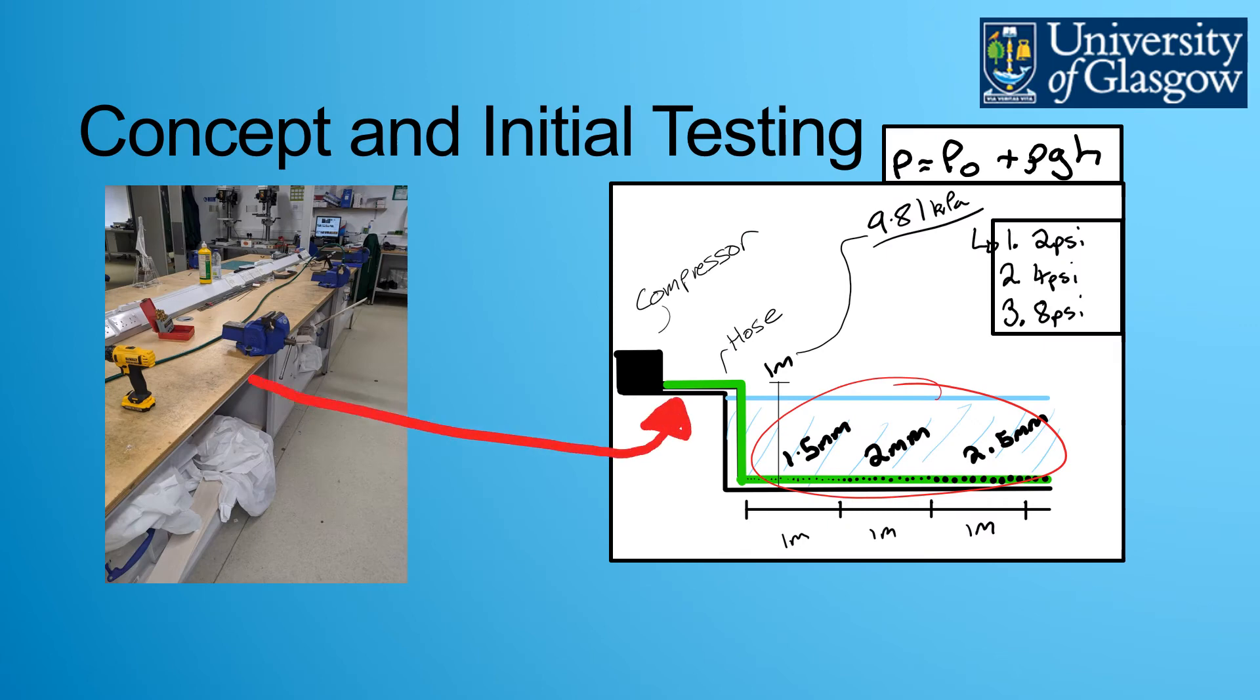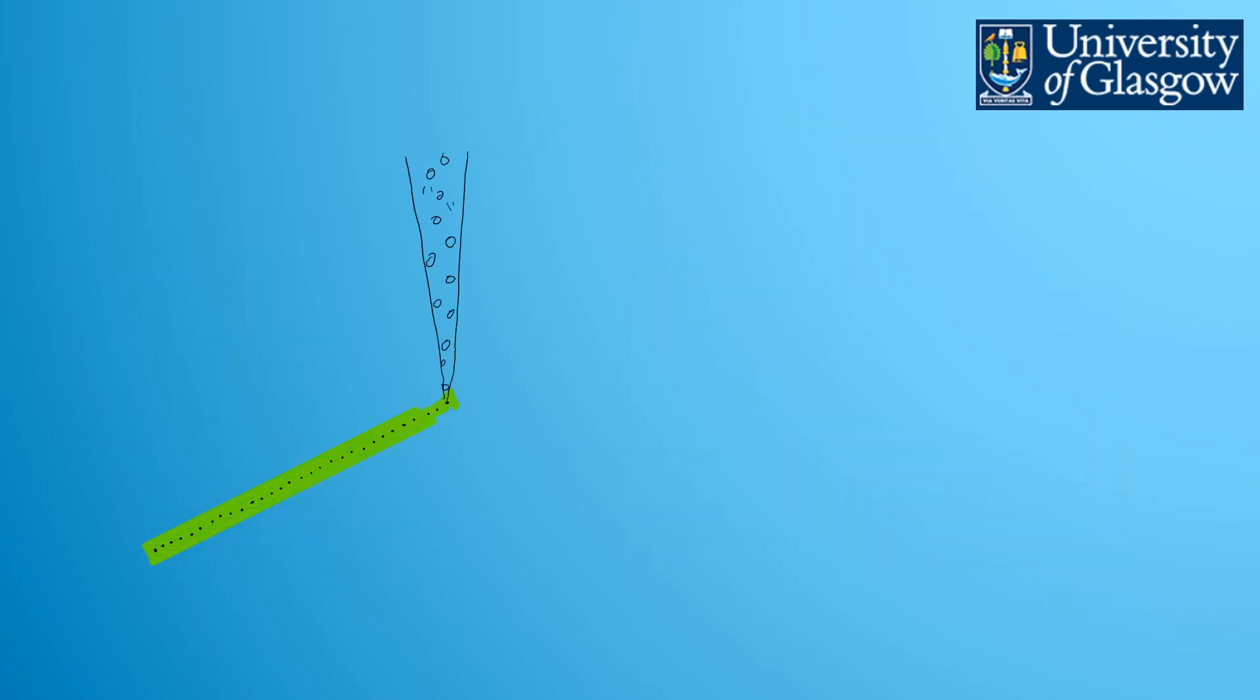But of course this wasn't full scale so I began to test for full scale models. I designed something that could be placed inside the pool. I calculated different pressures that I could have tested by using rho GH. I found that the pressure at one meter would be roughly 1.5 psi so I came up with different psi's to observe what would happen.